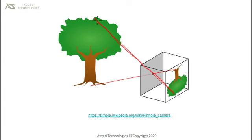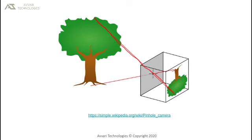Because light travels in a straight line, the ray from the top of the tree, once it passes through the pinhole, will be cast on the bottom of the pinhole camera. And when we come to the bottom of the tree, once the ray passes through the pinhole, it will be cast on the top of the pinhole camera.